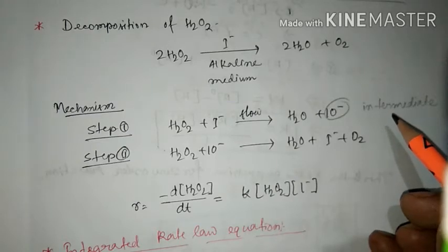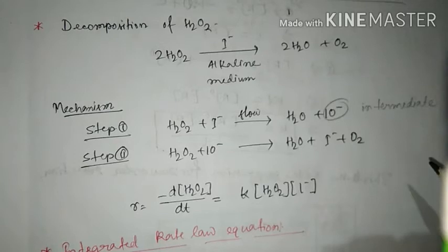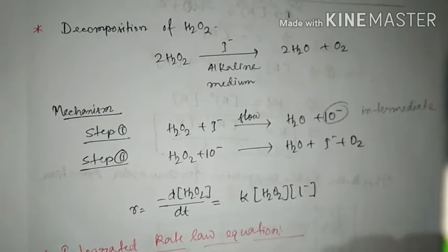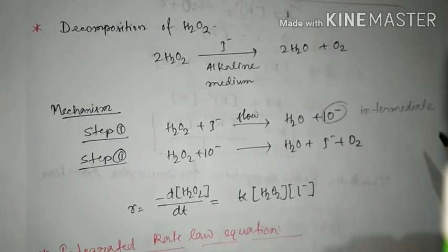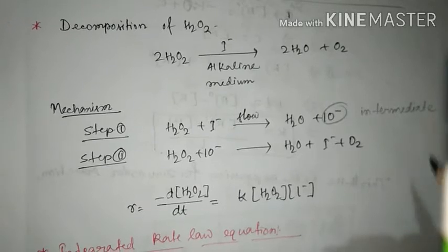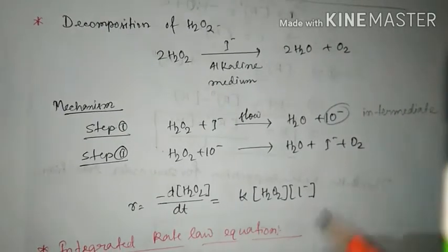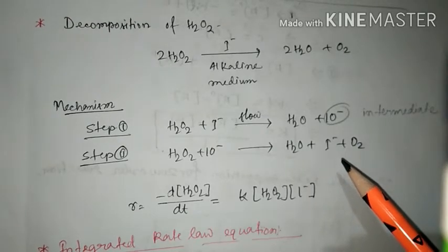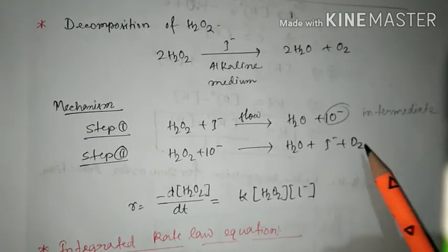Hello everyone. Today we will study about the mechanism of a chemical reaction. Let us see what mechanism is first. Mechanism is defined as how the reaction proceeds, or in which path or in which way the reaction proceeds. You can say in another sense: what are the steps in which the reaction proceeds.